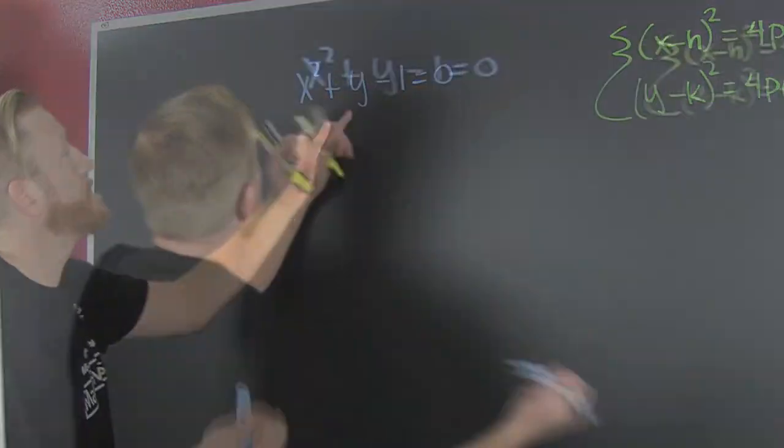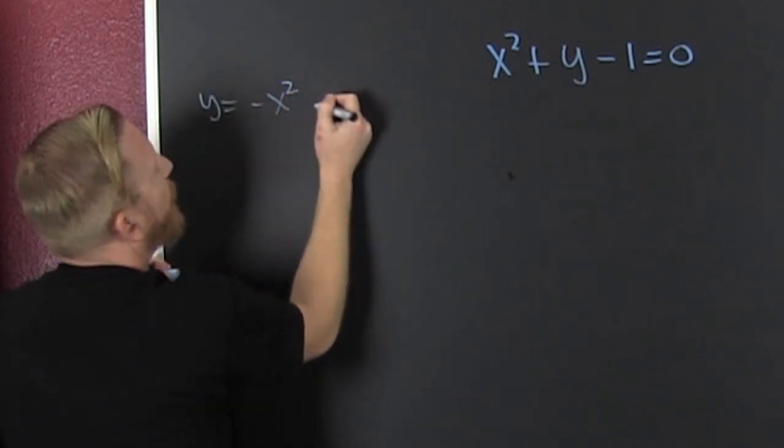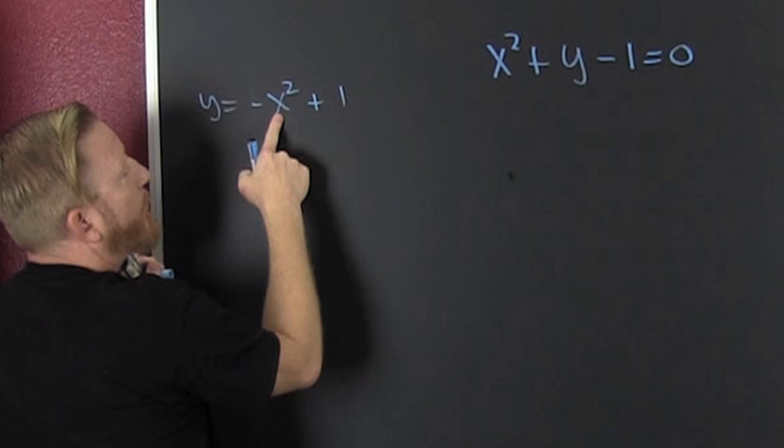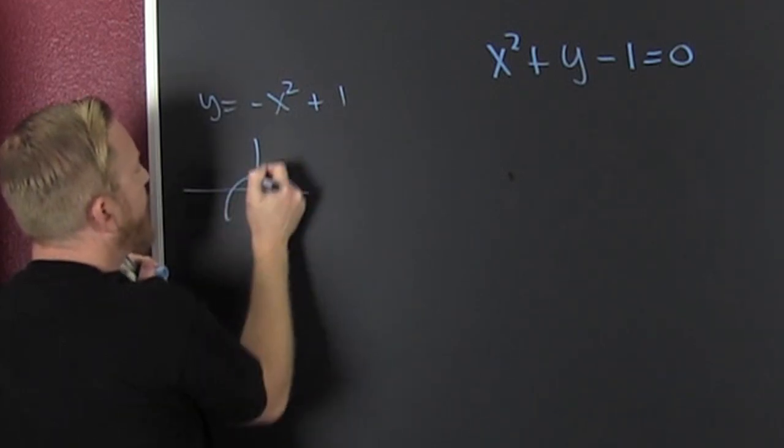When you were small, you just went and you were all like y is equal to negative x squared plus one. It's a parabola opening down, shifted up one. So you're all like bam, you do one of these and you do it.